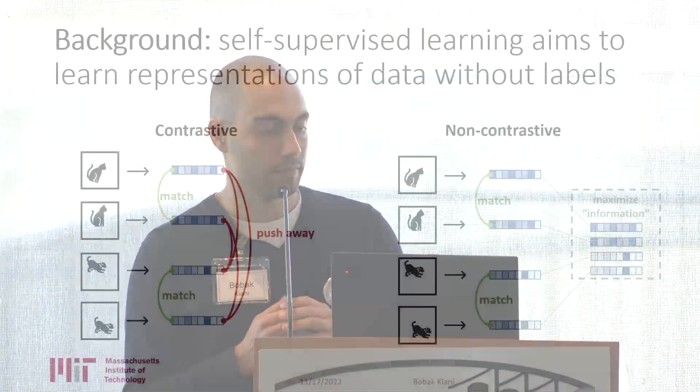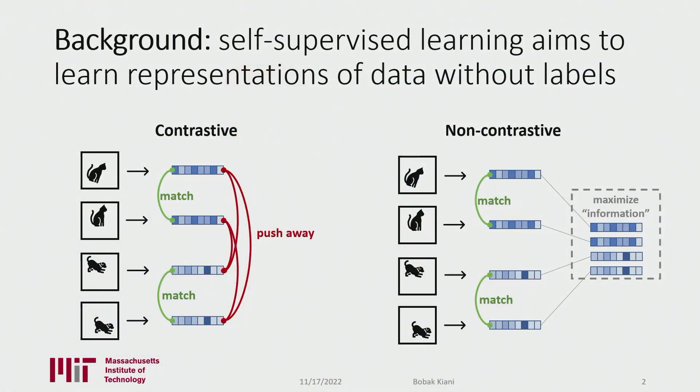We're looking at the joint embedding framework, where the basic idea is you want to learn in an unsupervised fashion, but you have some information which relates images or inputs. We look at augmentations, and there are two different ways to do this. The first is contrastive, where you augment an image and match representations for pairs from the same original image, then push away or contrast those that are not related. More recently, there's been non-contrastive methods, where you also match representations but don't use any negative pairs. Instead, to avoid collapse — to avoid pushing everything to a constant — these ideas maximize information, ensuring that the information of your representation is not lost.